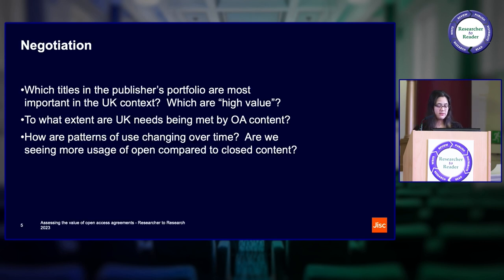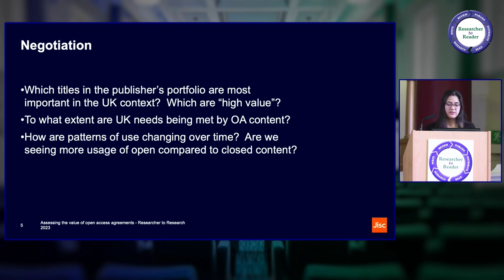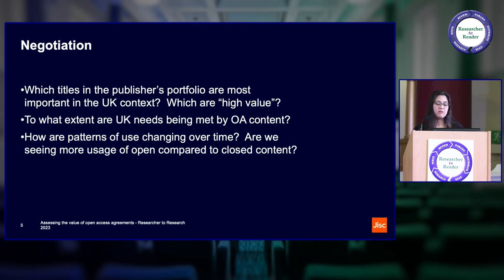Let's start with the most obvious use case: data-informed negotiations. Within JISC, we take a very data-driven and consultative approach when it comes to negotiation. There are three areas where USIS data can really help out: which titles in a publisher's portfolio are most important, particularly in the UK context; to what extent are UK needs being met by OA content currently; and how are these patterns changing over time — are we seeing more open compared to closed usage?